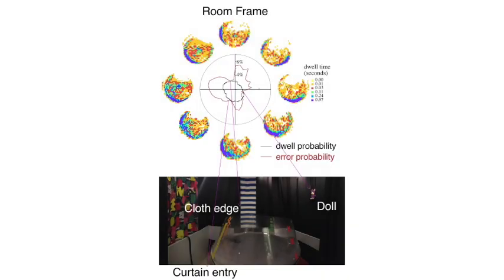This video shows what the room frame looks like from the vantage point of the arena. And when we decode the rat's head direction from the population activity of head direction cells, we notice that the error is minimal at the edge of the striped cloth, at the doll, and at the entrance to the curtain.